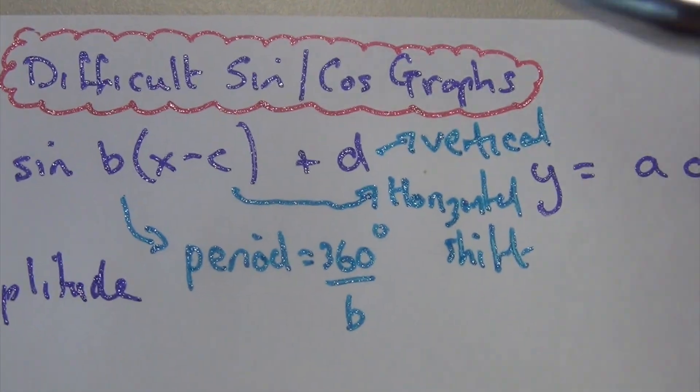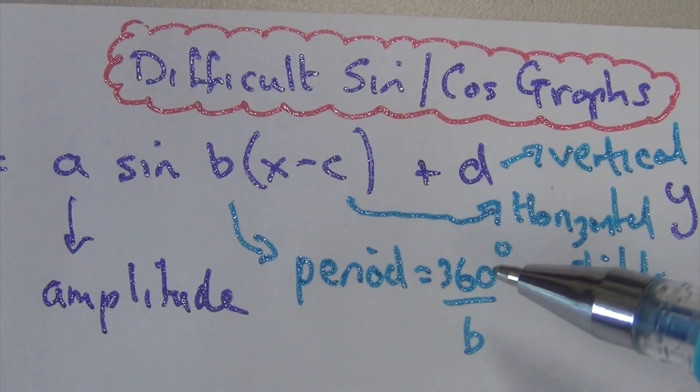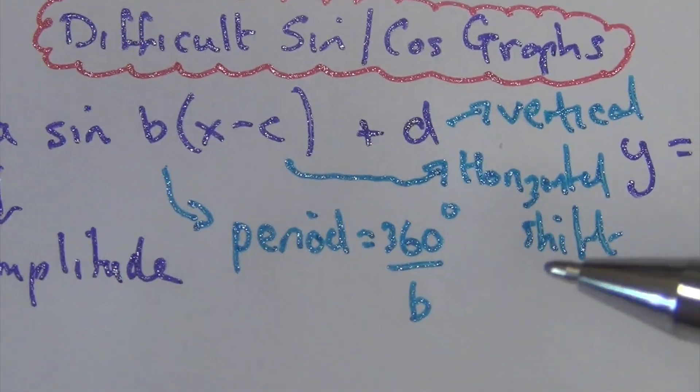Same thing for the cos. We'll go through that again. You see the A gives us the amplitude. The B helps us find the period. 360 divided by that number gives us the period.